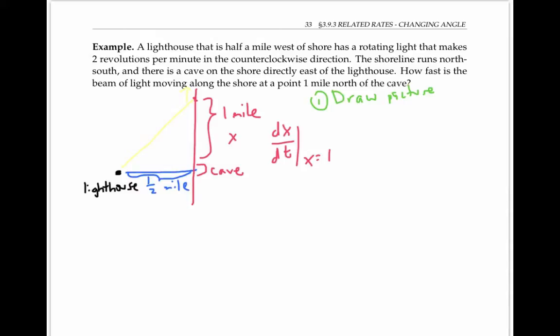The hypotenuse of this right triangle made by the beam of light is also changing with time, as is the angle here between the beam of light and the east-west line—I'll call that angle theta. And the angle up here I suppose is also changing, call that phi. This angle is the right angle between the east-west line and the north-south line, so that doesn't change. It's always 90 degrees.